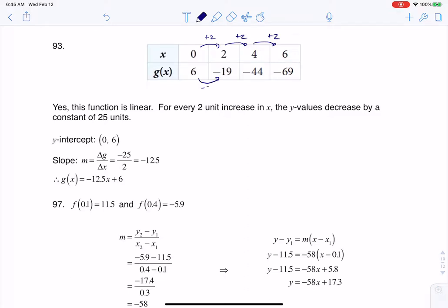To get from 6 to negative 19, I would have lost 25. And to get from negative 19 to negative 44, I would have lost 25. And sure enough, to get from negative 44 to negative 69, I would have lost 25. So that is a constant rate of change.